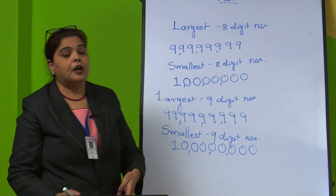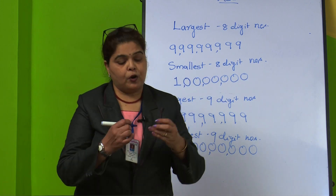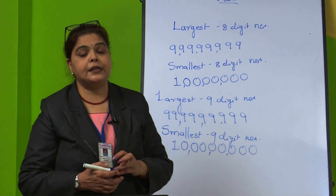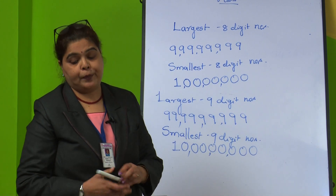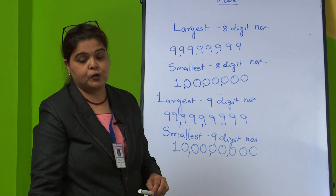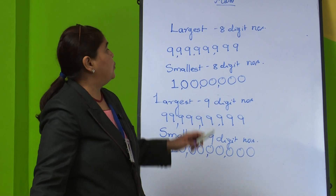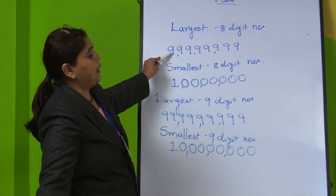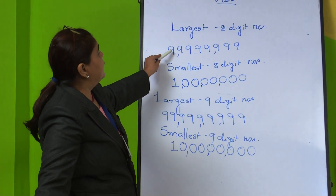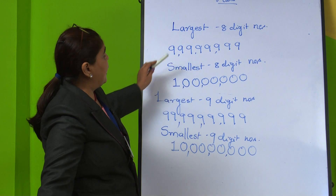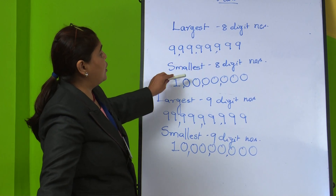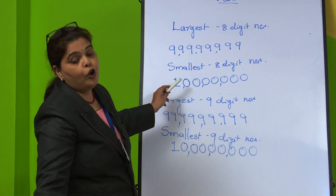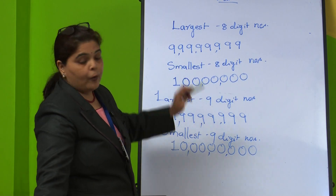Everyone understood this because you had learned it in your previous class also. When it is the largest, write 9, 9, 9... and when it is smallest, go for 1, 0, 0, 0... according to how many digit number you have to create.